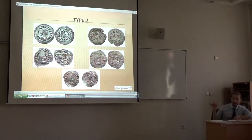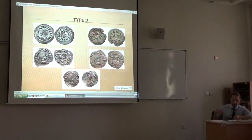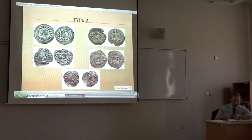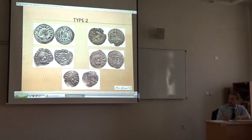Within Type 2, there are many variations in general style, monogram style, presence or absence of a dotted circular border, general style of the obverse, the legend, the type of the legend, and many other details. However, each coin has clearly shown the three fundamental traits characterizing Type 2.